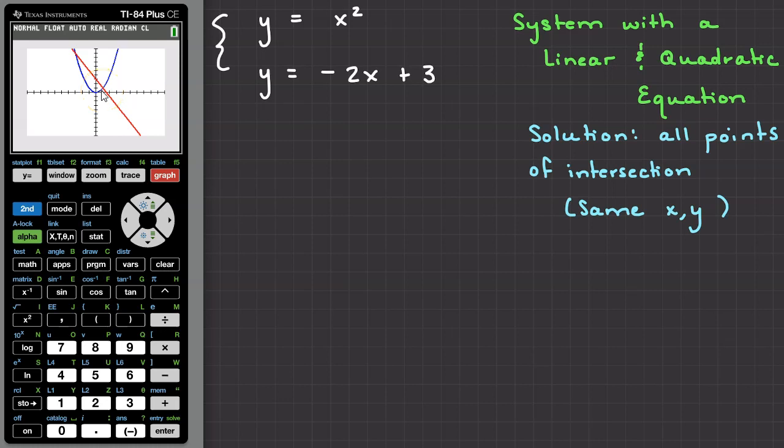We can predict that the first solution, over here on the left, is located around the point x equals negative 3, and the second solution, over here in quadrant 1, is located around the point x equals 1.